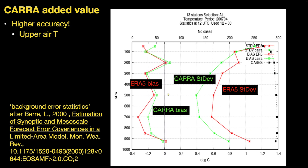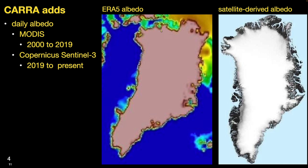Here is a comparison of ERA5 and CARA. For these 13 stations in Greenland, the CARA bias in green is closer to zero than ERA5. This verification study, where some observations are left out, confirms that the assimilation has lower bias and lower variance compared to ERA5. Regarding satellite-derived surface reflectivity, also known as albedo, ERA5 has a constant albedo for the Greenland ice sheet at 0.84. By adding in the satellite measurements, we get a much more accurate description of surface reflectivity, which defines how much sunlight the surface absorbs, improving temperature over land and over the ice sheet.